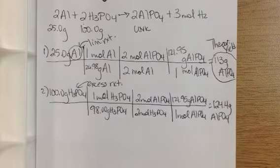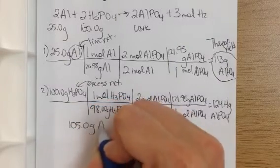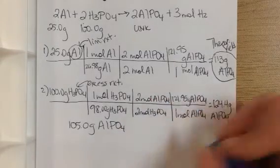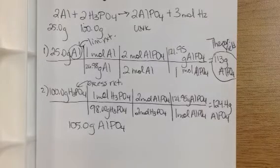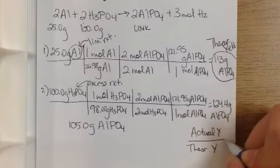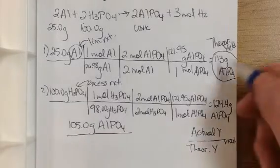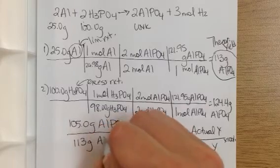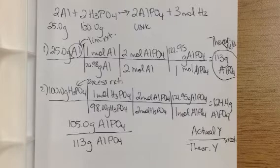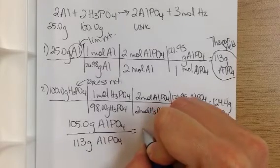The percent yield for the reaction, the question was, if I had 105 grams of it that I made in lab, then what is my percent yield? So the percent yield is going to be the actual over the theoretical yield times 100%. So I have 105.0 grams that I said I got in lab, divided by my 113 grams that I said was my theoretical yield. And that comes out to be 92.92%, in this case, with three sig figs, 92.9%.